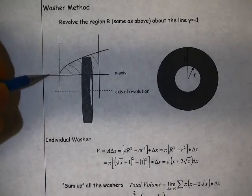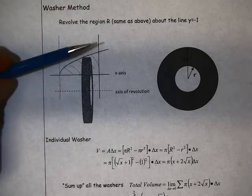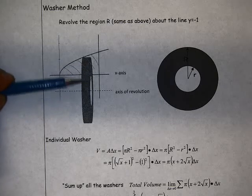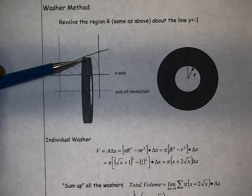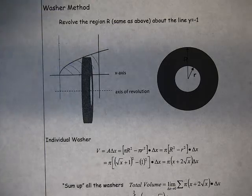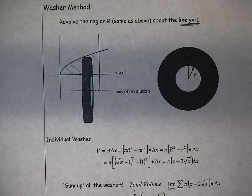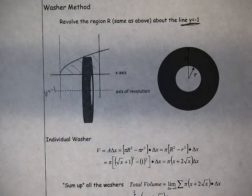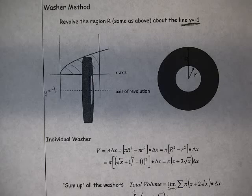Last time we rotated it around the x-axis. And so when we rotated this shape around the axis, we got a solid shape, a solid three-dimensional shape. In this case now, we're going to rotate that same region about the line y equals negative 1. So here's the axis of revolution down here.